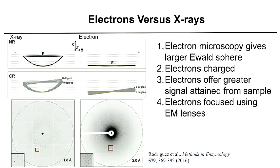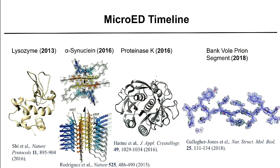When we do continuous rotation with electrons, the intersection of the Ewald sphere with the reciprocal lattice gives spots falling along lines. Also, because electrons are charged, they interact with the nucleus and the electron cloud, offering much greater signal from your sample. Electrons are also focused using electromagnetic lenses. Turning to a brief history of micro-ED: in 2013, the Gonen lab determined the first protein structure of lysozyme; three years later, the Eisenberg lab determined the structure of alpha-synuclein; shortly after, the Gonen lab determined proteinase K; and very recently the Rodriguez lab determined the sub-angstrom structure of the BANF1 prion segment.